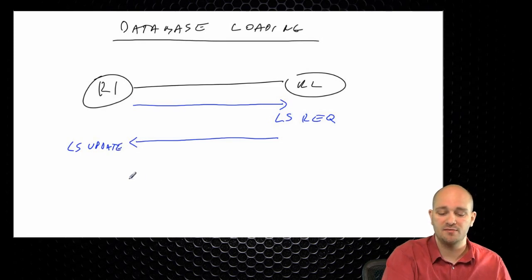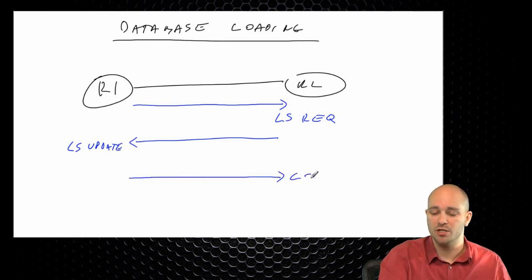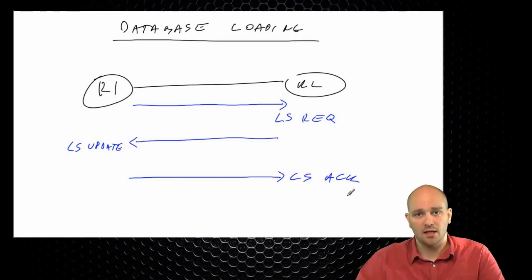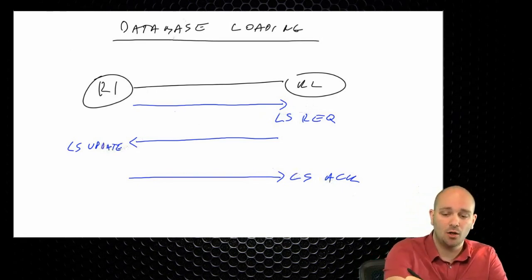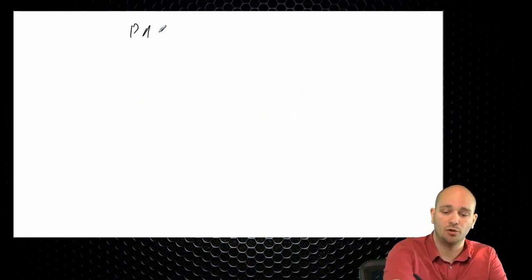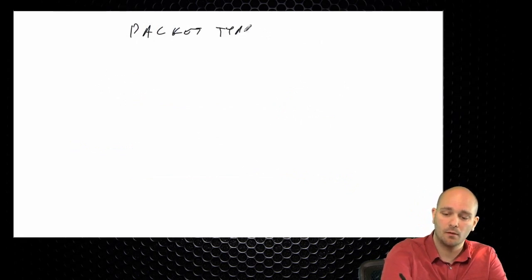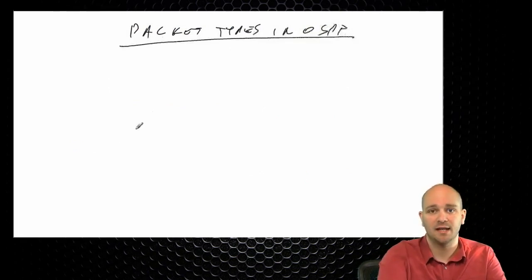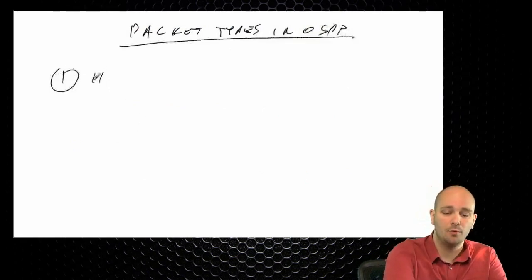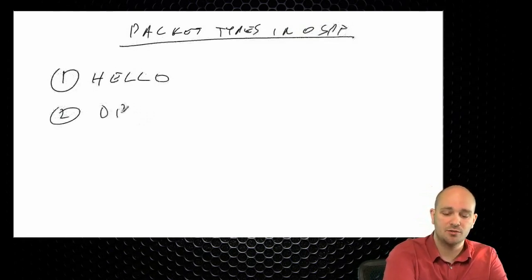Based on that information, you compare the contents of their database with yours and say, 'This is the information I would like to have.' The same thing happens in both directions. The exchange phase is essentially an exchange of menus — this is what I have, this is what my neighbor has — and then we determine what information we actually need to get.